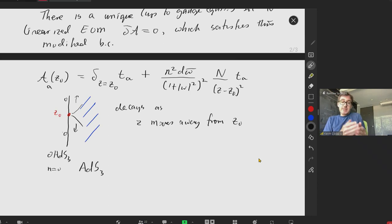Decays as z moves away from. So this is the kind of thing you want for a state, right? On the boundary, it's localized at a particular point. As you move away from the boundary, it spreads out away from that point with some particular decay rate. The decay rate, of course, will be related to the two-point function. And that's good because this state is related to the current. And the two-point function of the current goes like 1 over z squared.